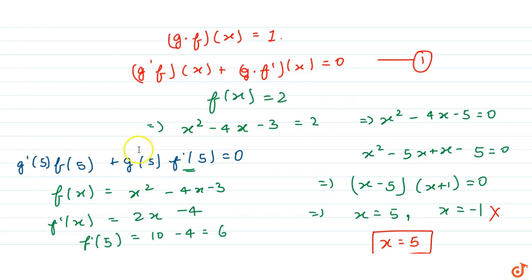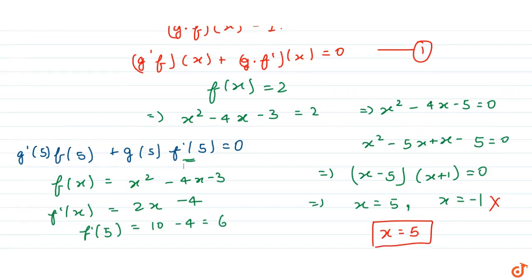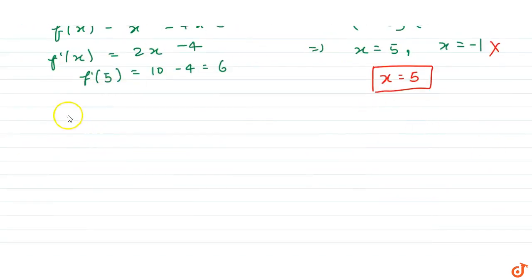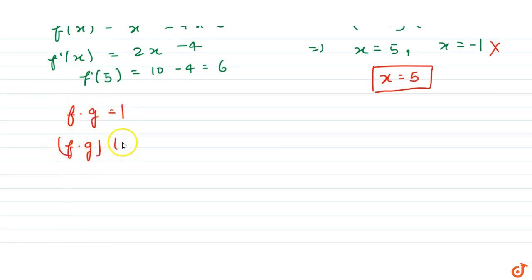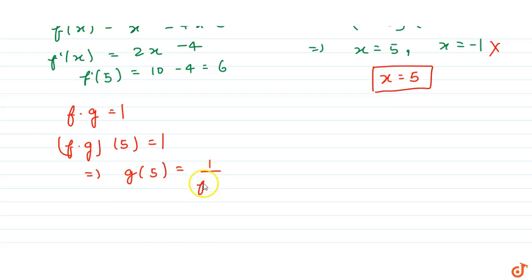Now we find the value of g of 5. Since f into g equals 1, we have f into g of 5 equals 1, so g of 5 equals 1 divided by f of 5. Since f of 5 is 2, we get g of 5 equals 1 by 2.